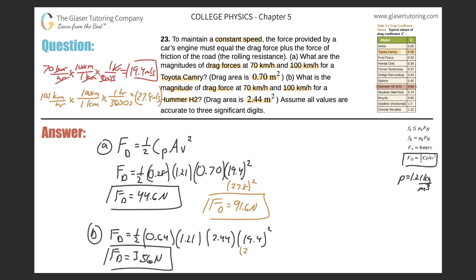Now let's do the same thing but plug in 27.8, and that's going to be squared. I'm going to do the same calculation here and just change the value: 0.5 times 0.64 times 1.21 times 2.44 times 27.8 squared: 730 newtons. Even better.